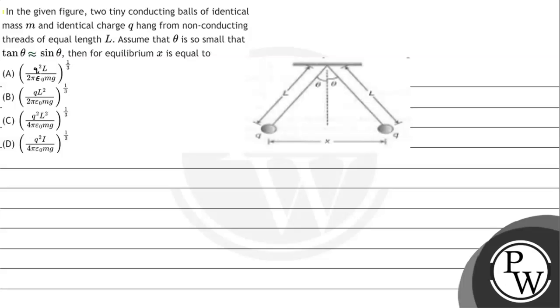Let's read the given question. The question says in the given figure, two tiny conducting balls of identical mass m and identical charge q hang from non-conducting threads of equal length capital L. Assume that theta is so small that tan theta is approximately equals to sin theta. Then for equilibrium, x is equals to...